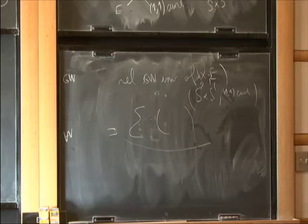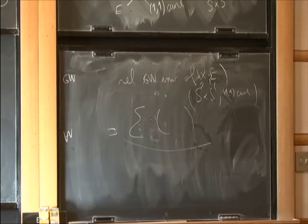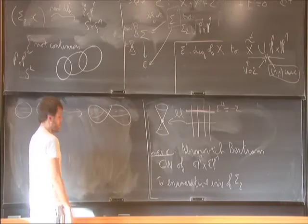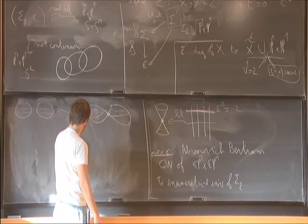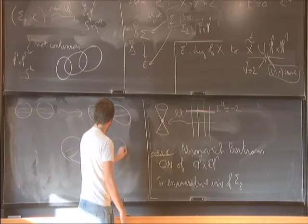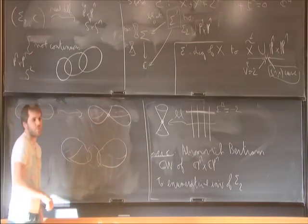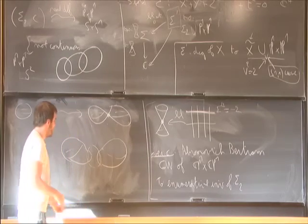I know that if I have a symplectic real surface with two connected components, I can go to some nodal symplectic surface. So if I have two connected components, I know that I can degenerate to something like that. That's the first point. And now I can apply this symplectic sum game — it's not really a formula. Here in the neighborhood, I replace by some sphere, and I want to show that when I do this, my invariants will be 0.